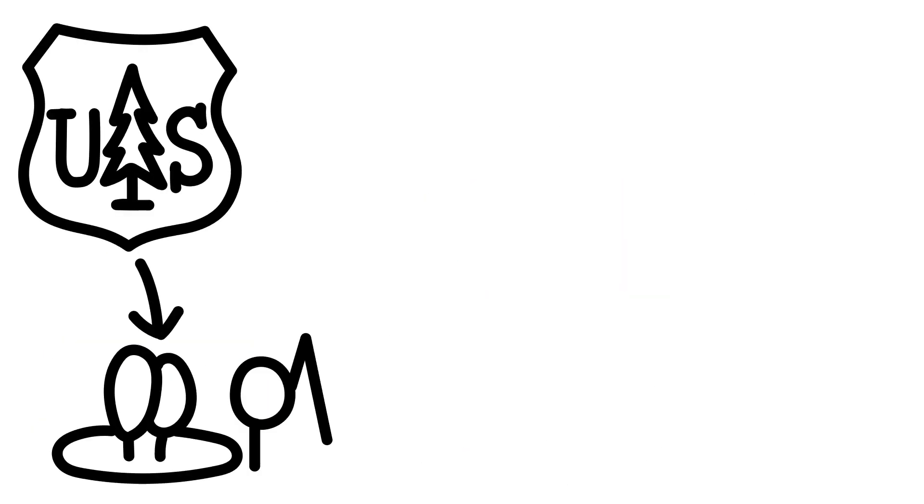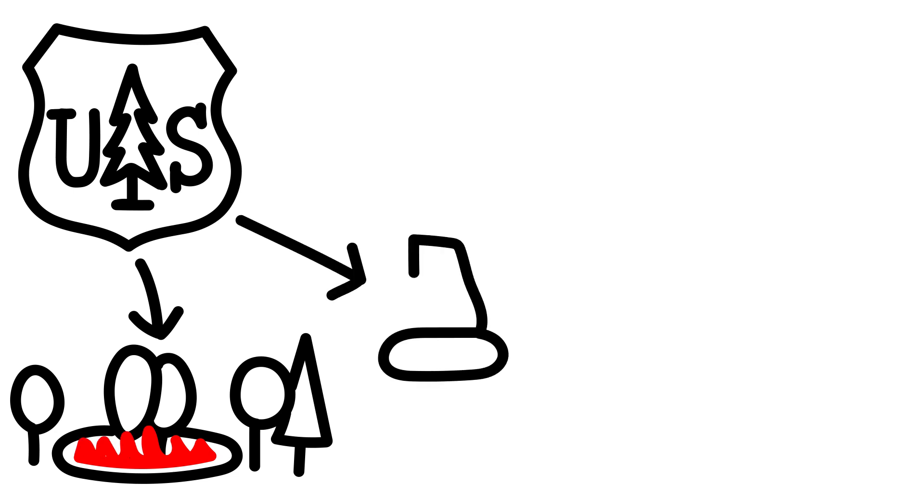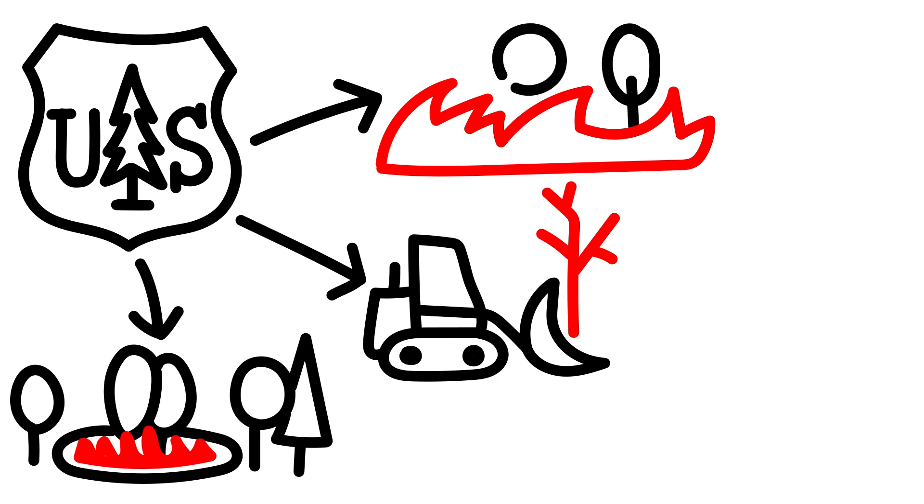The United States Forest Service has now started taking countermeasures in the form of controlled burning, use of machines to clear out the dead trees, and even leaving some natural fires to burn their course, if feasible.